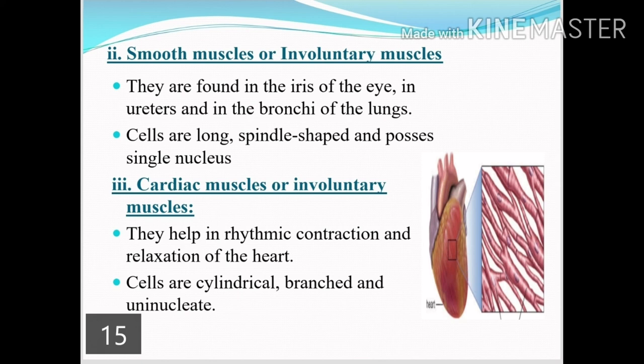The third type of muscle cells is cardiac muscles, also involuntary muscles because they act according to their own function. They help in the rhythmic contraction and relaxation of the heart. Their cells are cylindrical, branched, and uninucleated — meaning a single nucleus is present.